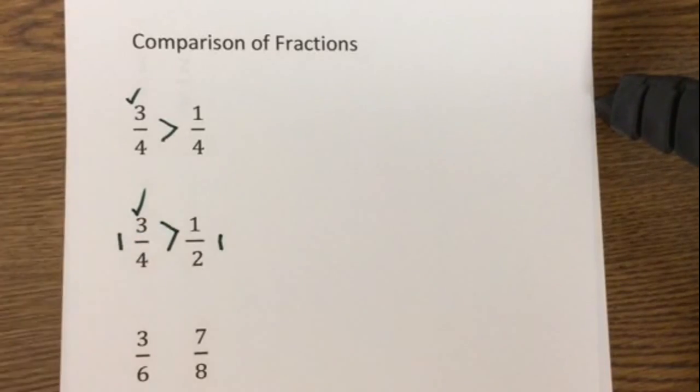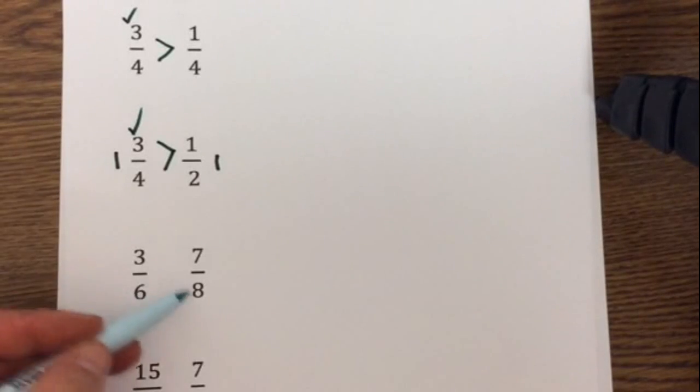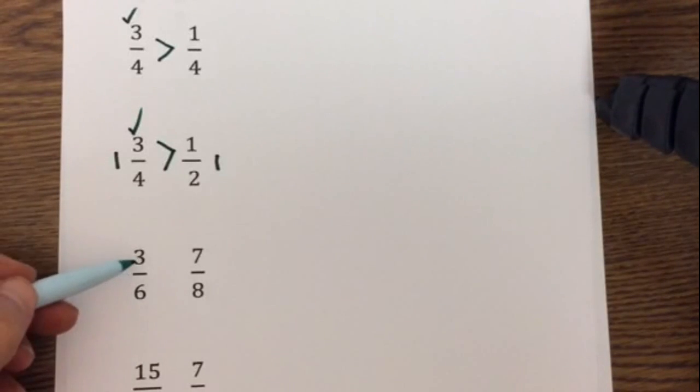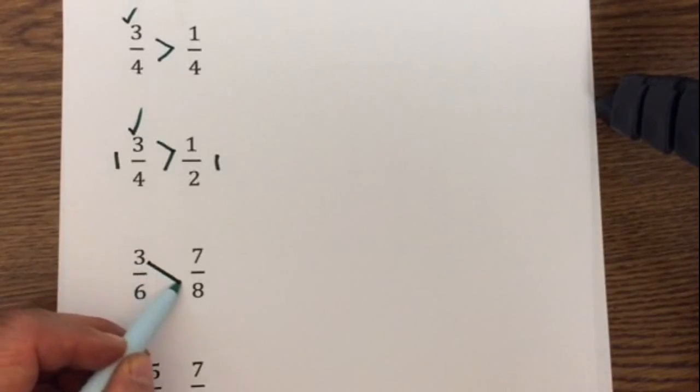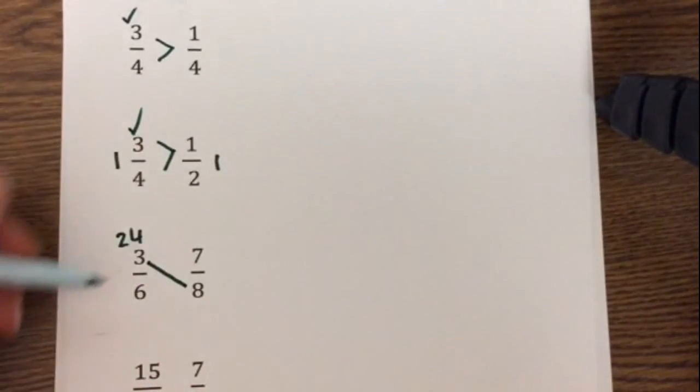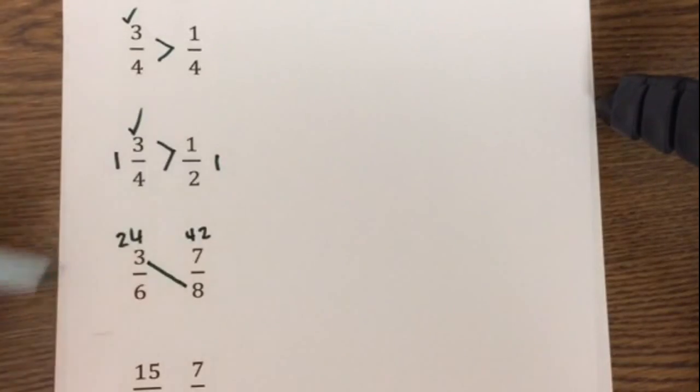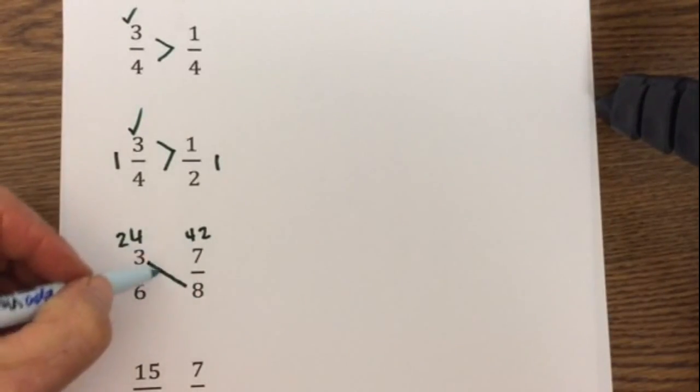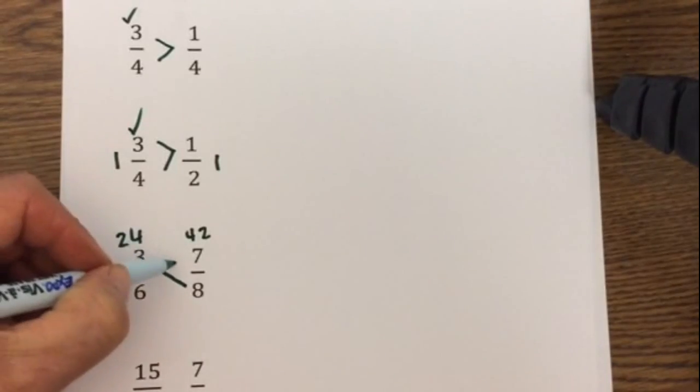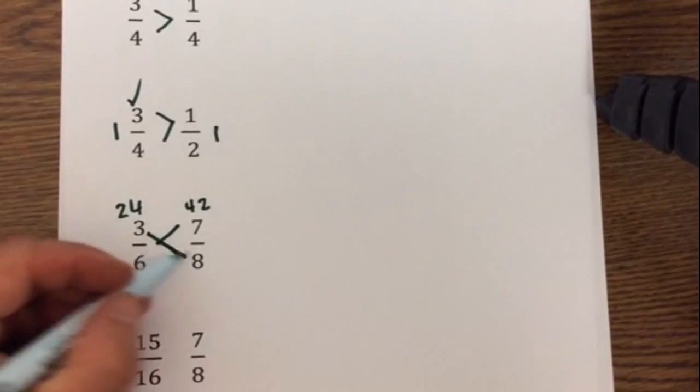In this next example, denominators are different. I can glance quickly, 6 minus 3 is 3, 8 minus 7 is 1, so I'm going to have to cross multiply. So I go 3 times 8 is 24, 7 times 6 is 42, and so 7 eighths is greater than 3 sixths. That was just cross multiply.